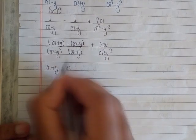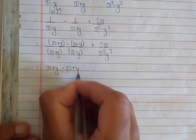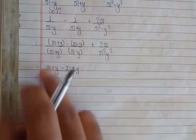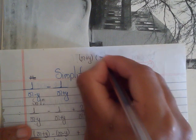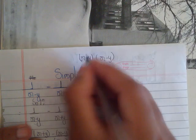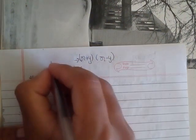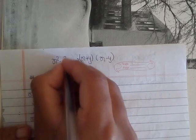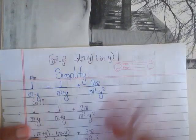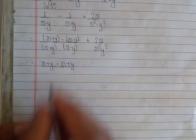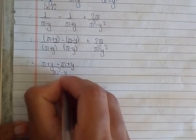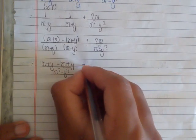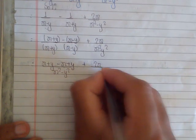This becomes x+y-x+y, and minus times minus becomes plus. We know the formula: x²-y² = (x+y)(x-y). So we'll simply write this formula here - in the denominator we'll write x²-y² plus 2x/(x²-y²).